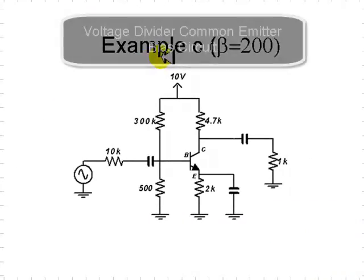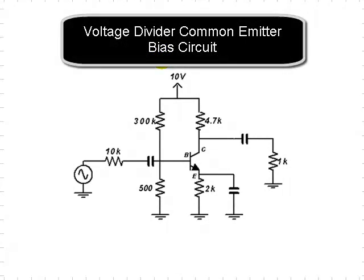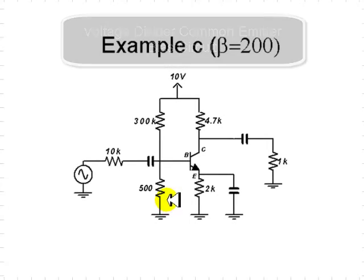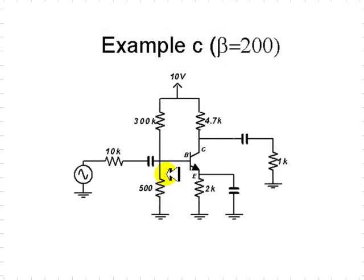This is example C. This is a common emitter voltage divider bias circuit. A voltage divider bias circuit with a common emitter configuration.